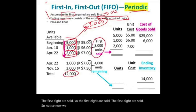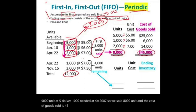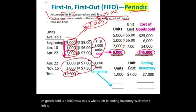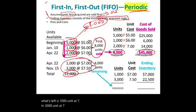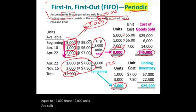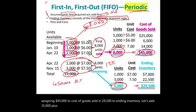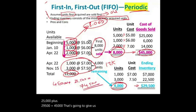Now we can compute cost of goods sold under FIFO periodic: 5,000 units at $5, 1,000 units at $6, 2,000 units at $7 — totaling 8,000 units sold with cost of goods sold of $45,000. Ending inventory: 1,000 units at $7 and 3,000 units at $7.50, total 4,000 units with ending inventory of $29,500. Adding: 4,000 + 8,000 = 12,000 units; $29,500 + $45,000 = $74,500. That magic number again — split between cost of goods sold and ending inventory.